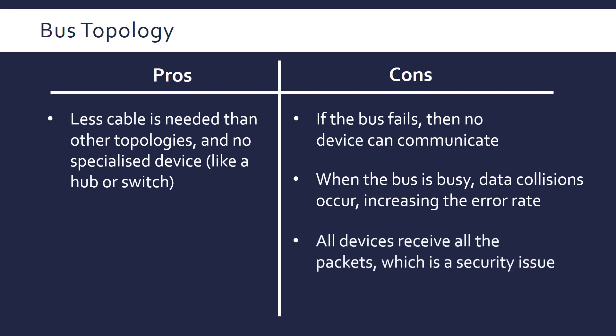One disadvantage which can be quite detrimental is that all devices can receive the packet. So if you send a packet, all the other devices can view it if they want to — they might not process it, but they can view it and see what it's all about, which is obviously going to be a security issue. In a normal environment like a small office where security is not that important it's not really an issue, but there are contexts where security is much more important and you might choose a more secure topology.